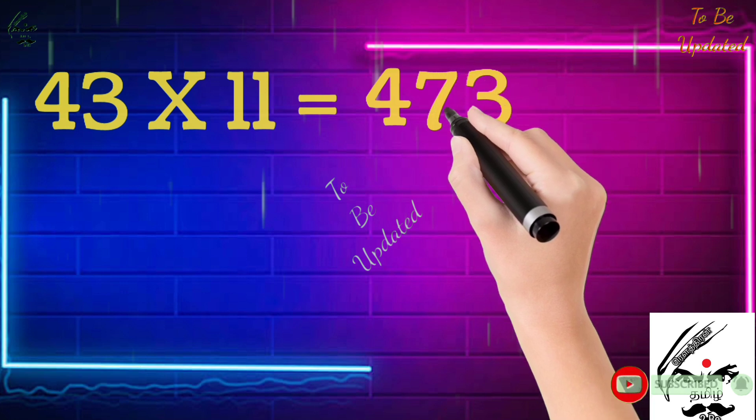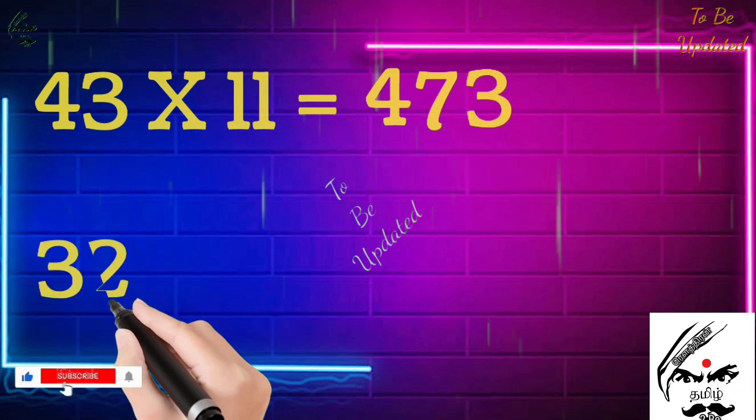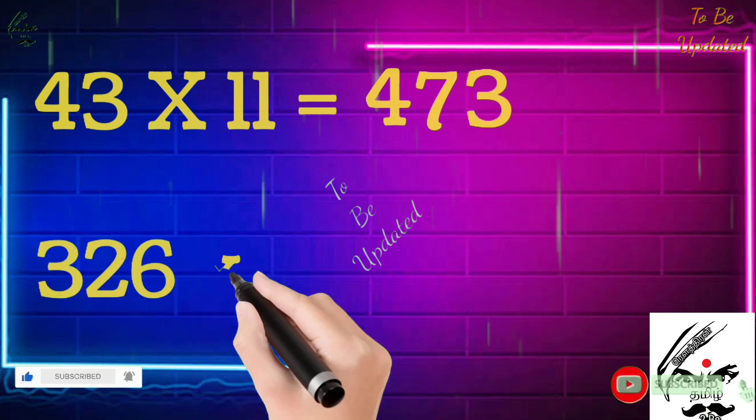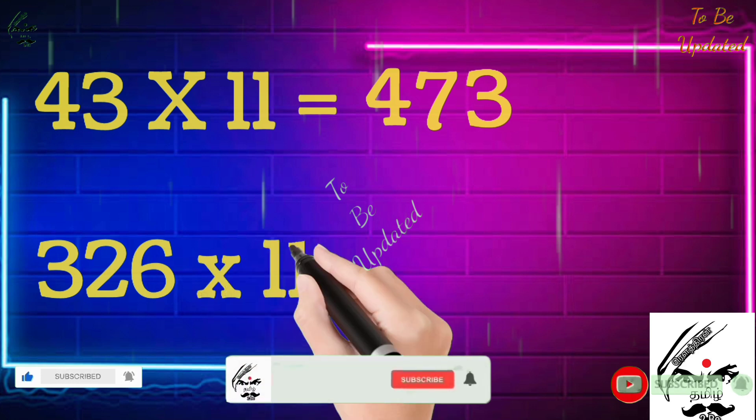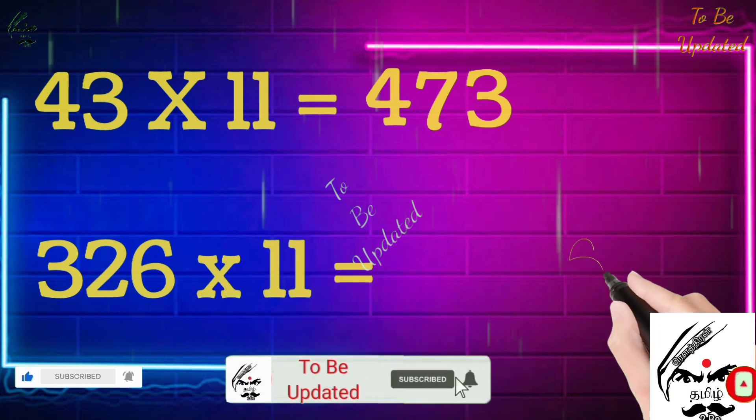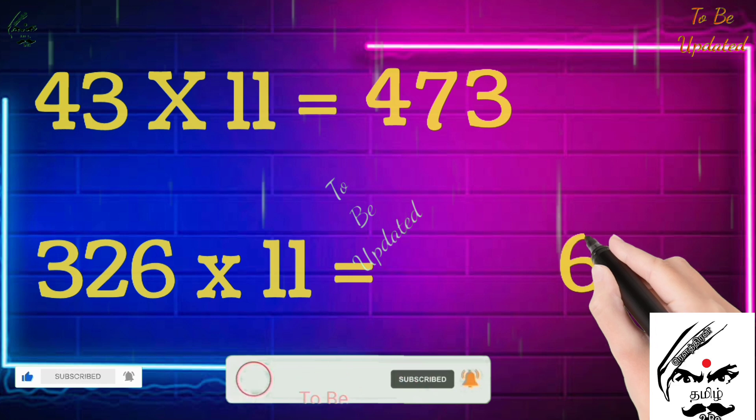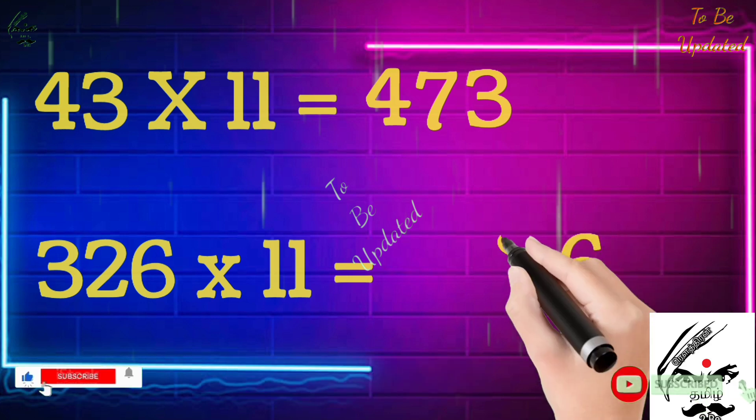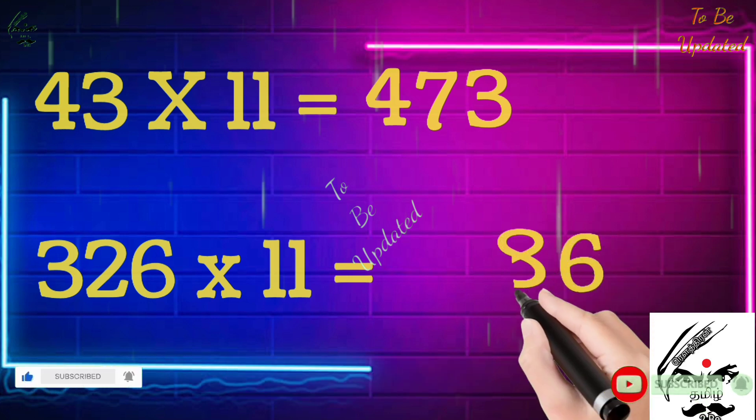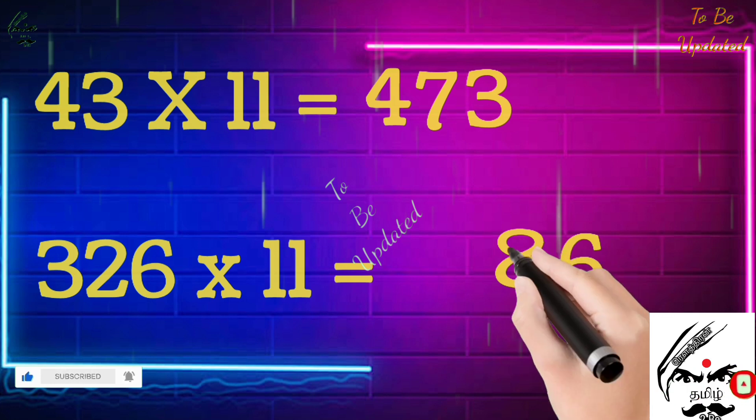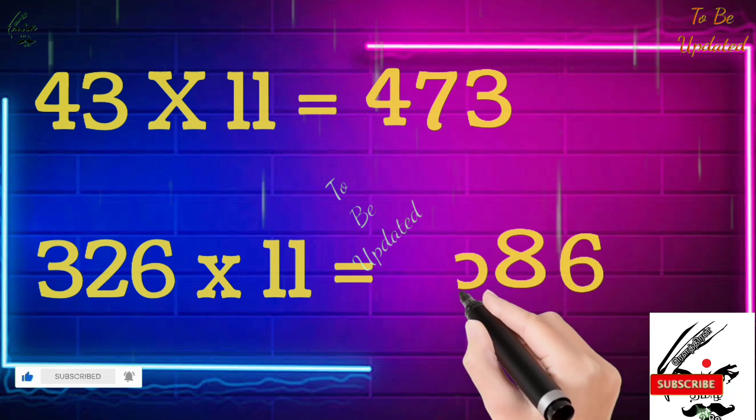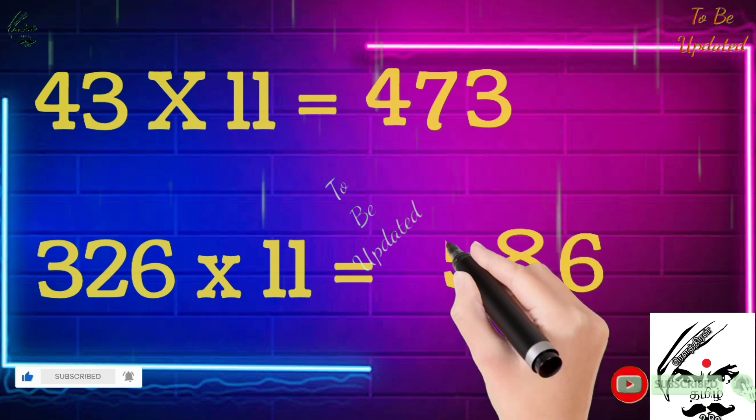One more example I will show you: 326 times 11. See it well. First unit digit 6 as it is. Next, previous digit is 2. 6 plus 2 we get 8. Now 2 plus 3 we get 5. First number must be written as it is: 3. That's all. 326 times 11 is 3586.